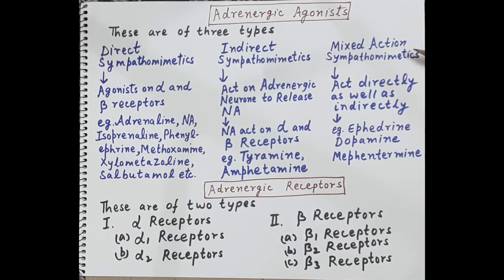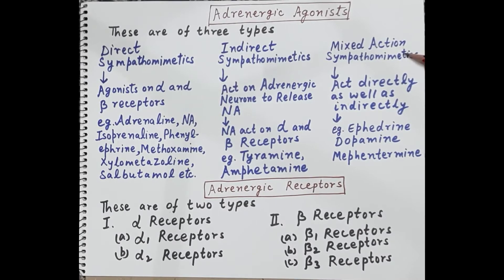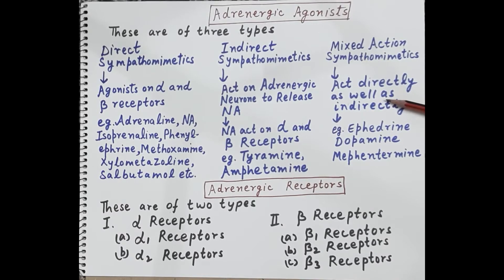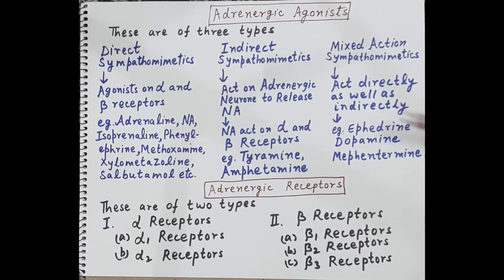The third category are mixed action sympathomimetics. These drugs act both directly — binding to alpha and beta receptors to produce a pharmacological response — as well as indirectly by stimulating adrenergic neurons to release noradrenaline. Examples include ephedrine, dopamine, and mephentermine.